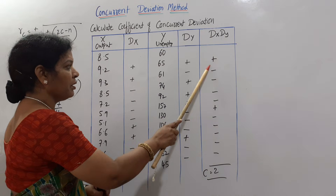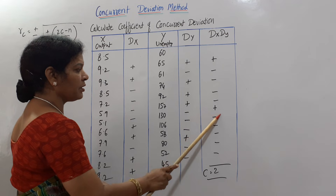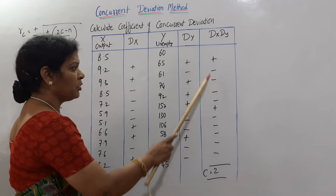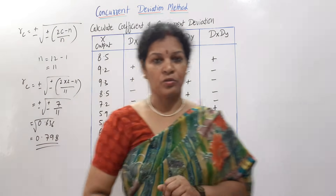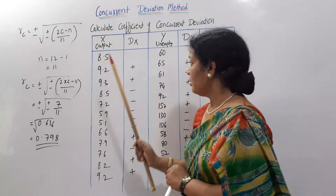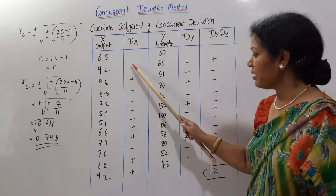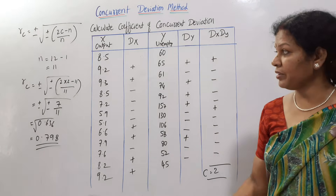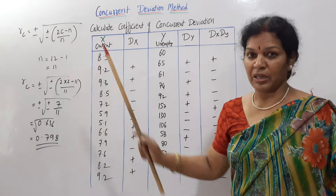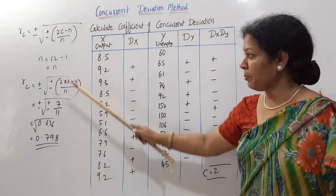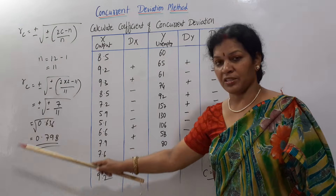Altogether, counting the plus values in dx×dy, we find plus only 2 times. So C is 2. Total observations are 12, but signs were taken for only 11, so n equals 12 minus 1, which is 11. Apply these values in the formula to get the final answer.